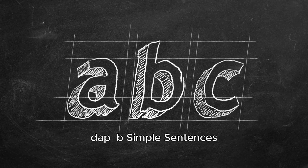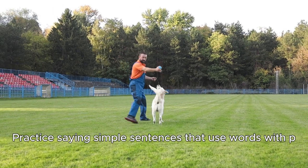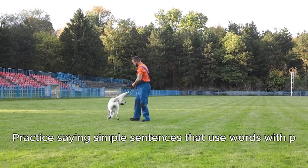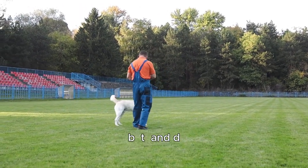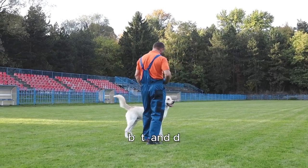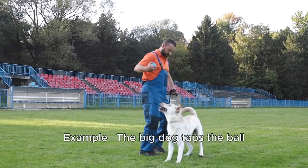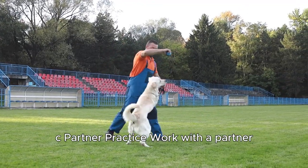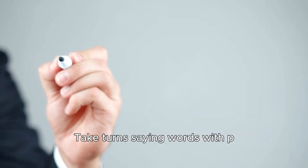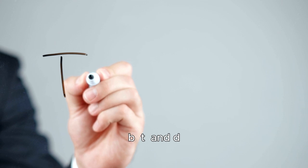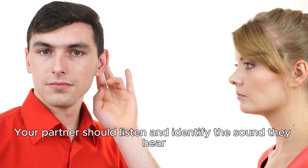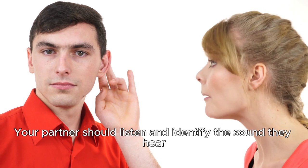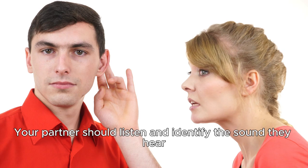Simple sentences: Practice saying simple sentences that use words with P, B, T, and D. Example: the big dog taps the ball. Partner practice: Work with a partner. Take turns saying words with P, B, T, and D. Your partner should listen and identify the sound they hear.